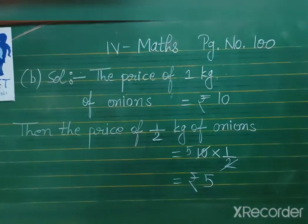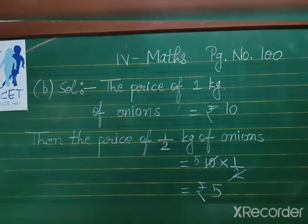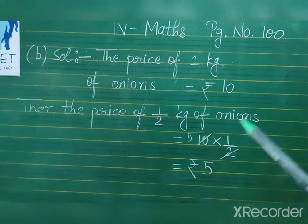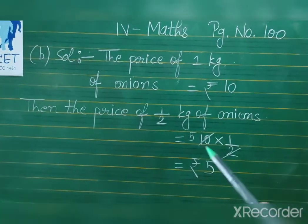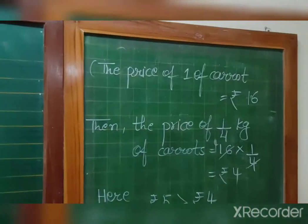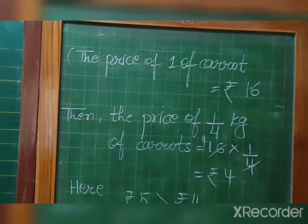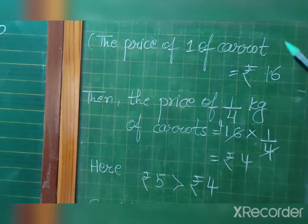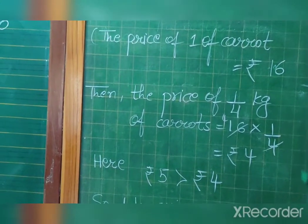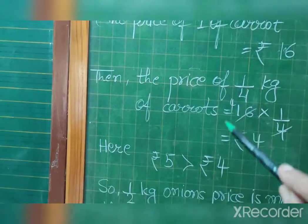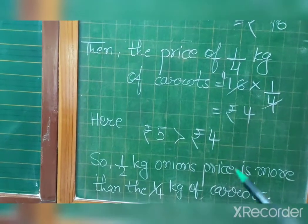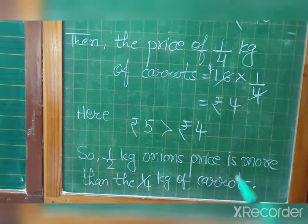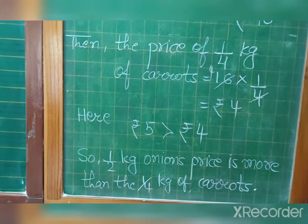Question B: The price of 1 kg of onions is rupees 10, so half kg of onions is 10 into 1 by 2 — rupees 5. The price of 1 kg of carrot is rupees 16, so one-fourth kg of carrots is 16 into 1 by 4 — rupees 4. Since rupees 5 is greater than rupees 4, half kg onions price is more.